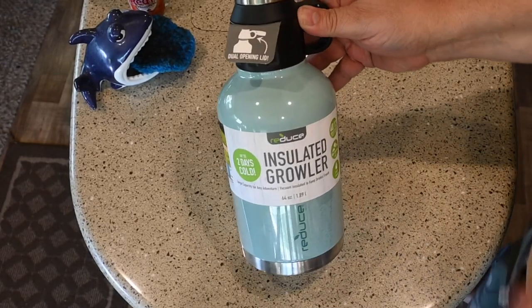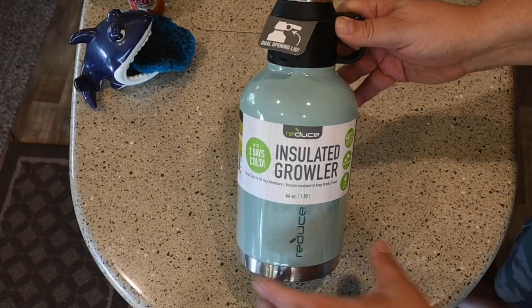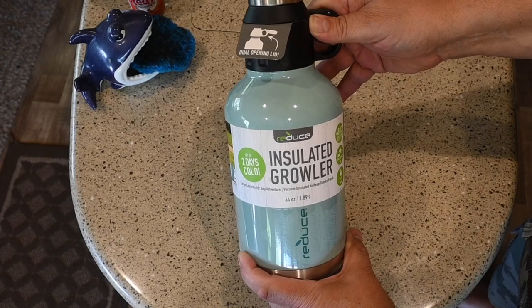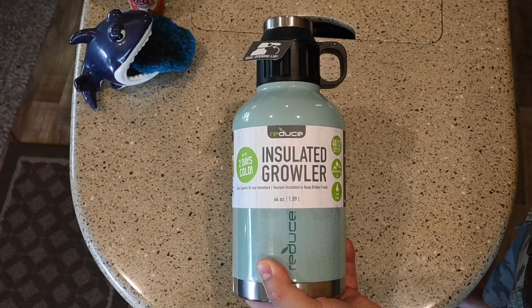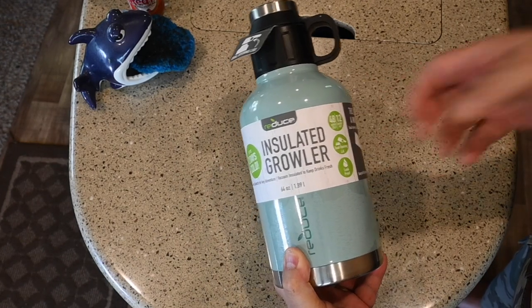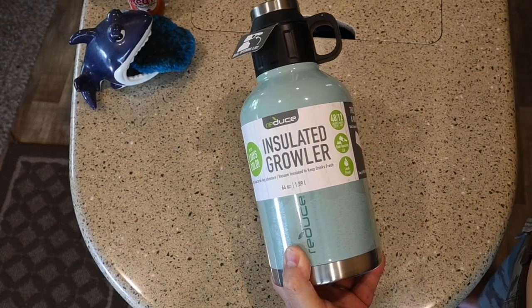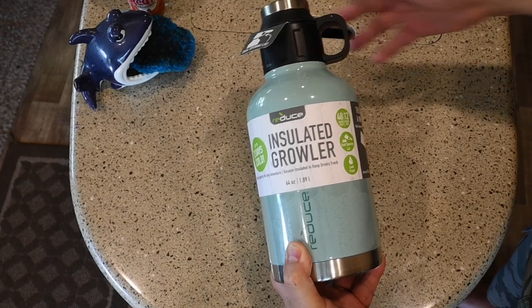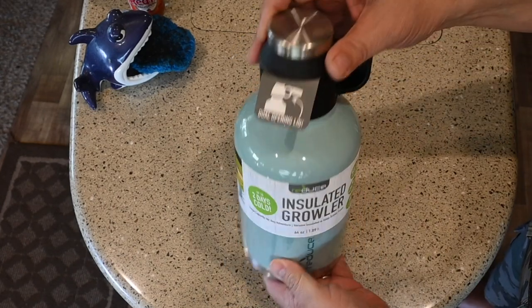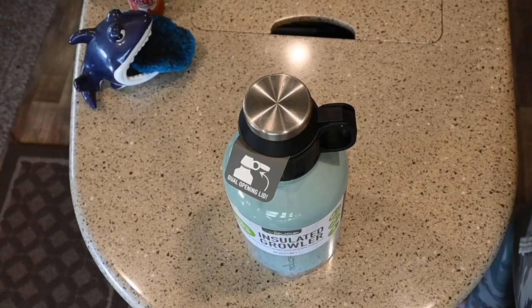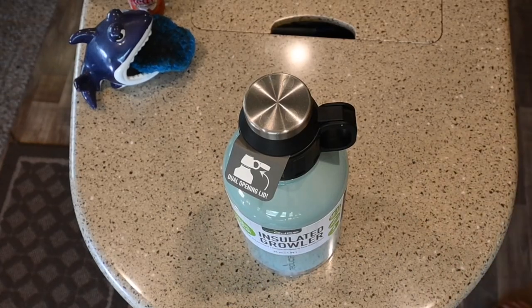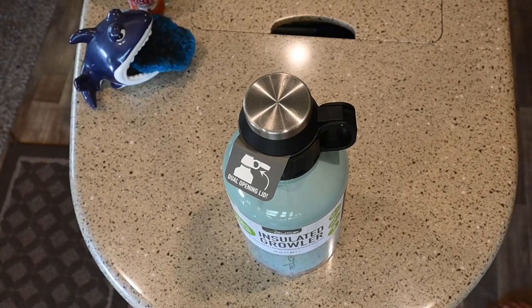We were in Costco the other day getting ready for the 2021 camping season and I ran across this insulated growler. It claims that it'll hold cold liquids up to 48 hours or hot liquids up to 12 hours. It's made out of aluminum and was under $20, so it wasn't that expensive.